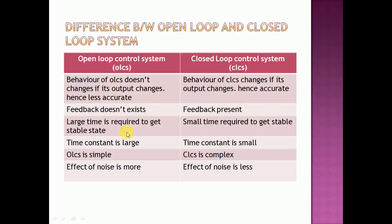More time is required to reach a stable state in the open loop system, whereas a small time is required in the closed loop control system. The time constant is large in the open loop and small in the closed loop. The open loop control system is simple in nature because feedback does not exist, whereas the closed loop system is complex. The effect of noise is more in the open loop system, whereas the effect of noise is low in the closed loop control system.